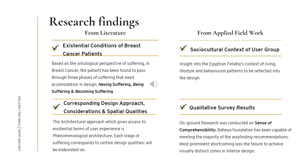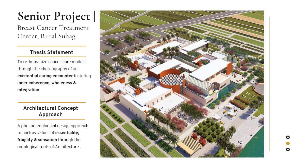Research findings were divided into two categories: those from literature and those from applied fieldwork. The former involved a deep understanding of the ontological perspective of suffering and its phases, and the corresponding architectural approaches and design qualities for its alleviation. The latter gave insight into the socio-cultural context of the user group and qualitative study results from examining the incorporation of a sense of comprehensibility at Bahaya Foundation for Breast Cancer. The senior project was a breast cancer treatment center in rural Suhag. The thesis statement was to re-humanize the cancer care model through the choreography of an existential caring encounter that fosters inner coherence and wholeness, using a phenomenological approach portraying values of essentiality, fragility, and sensation through the manipulation of the ontological roots of architecture.